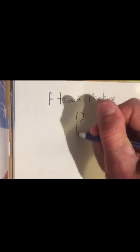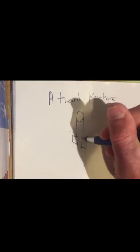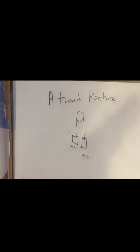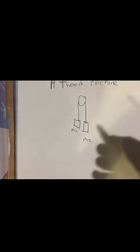That involves a pulley. We have two masses here, m1 and m2, and what we were interested in with the Atwood machine was determining the acceleration of both the masses. And we derived the equation for the Atwood machine using Newton's laws.